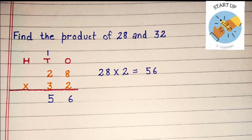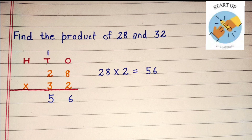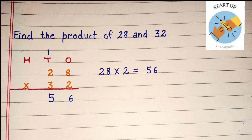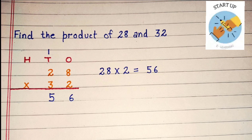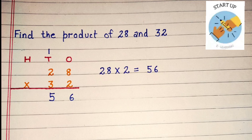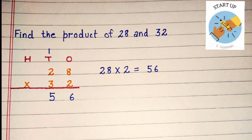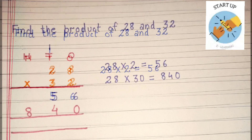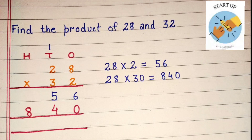Kids, first of all, we will multiply the multiplicand by 2. 28 multiplied by 2 is equal to 56. 2 multiplied by 8 is equal to 16 — 6 is written and 1 will be carried over on 10's. 2 multiplied by 2 is equal to 4, plus 1 carried over, is equal to 5. So, the answer is 56 here, and 56 will be called the partial product.